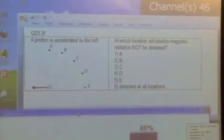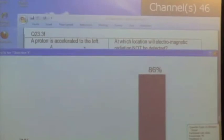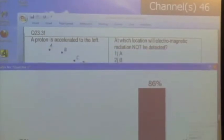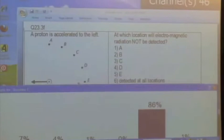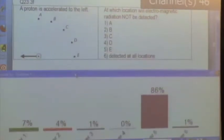Okay, everywhere except number 5, direction or location E, right? Because that is along the line of the acceleration. So we said everywhere except along the line of acceleration.